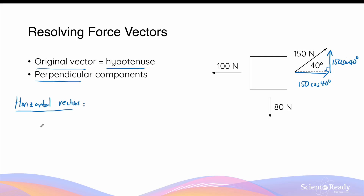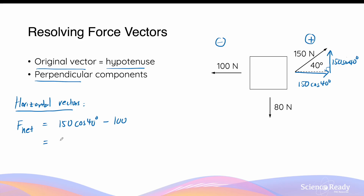Let's look at the horizontal vectors first. The right-hand side is represented by a positive, and the left-hand side is given by the negative sign. The net force in the horizontal direction is given by 150 cosine 40 degrees, which is the force vector acting towards the right-hand side, minus 100N, which is the horizontal vector acting towards the left side. This gives a net force of 14.9N to the right, as it is the positive answer.